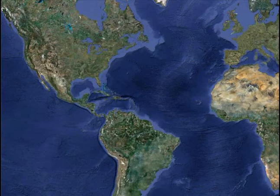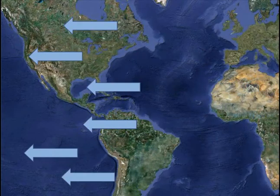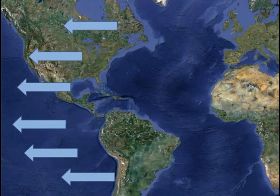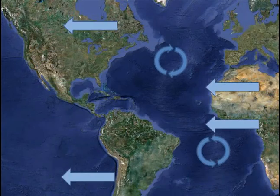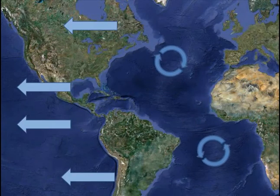Because Earth is a globe, it is wider near the equator than it is near the poles. Therefore, air will move slower at the equator relative to air in more northern or southern latitudes. This tends to cause eddies in the atmosphere.